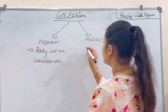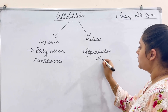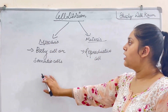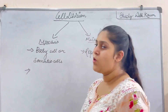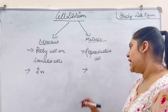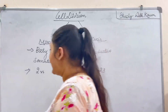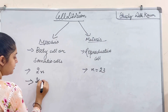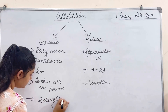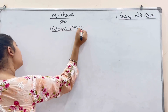Meiosis takes place in reproductive cells — like in testes and ovaries. In mitosis the number of chromosomes remains the same, it remains diploid. In meiosis it becomes half, that is haploid, and the n number stands for 23. In mitosis, two identical daughter cells are formed, but in meiosis four daughter cells are formed.